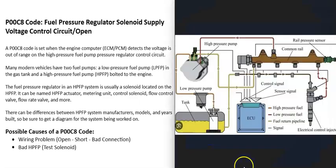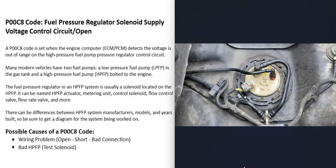Many modern vehicles have two fuel pumps: a low pressure fuel pump inside the gas tank, and a high pressure fuel pump bolted on the engine that pumps high fuel pressure up to the fuel rail, which then goes to the injectors. When you get this P00C8 code, the computer is seeing a problem with the fuel pressure regulator inside the system.